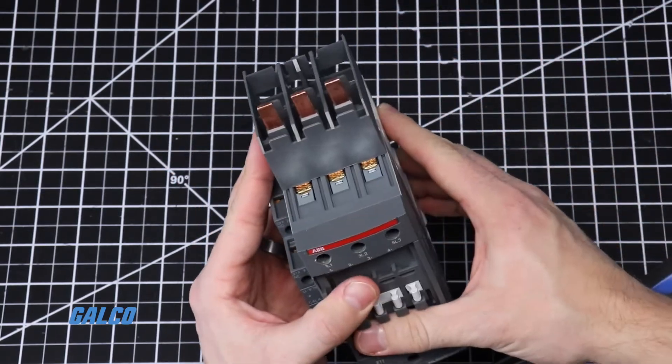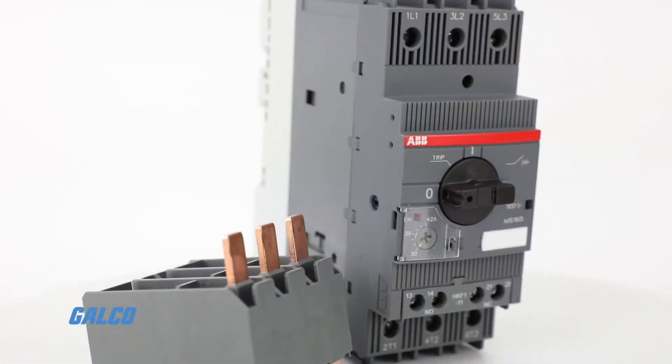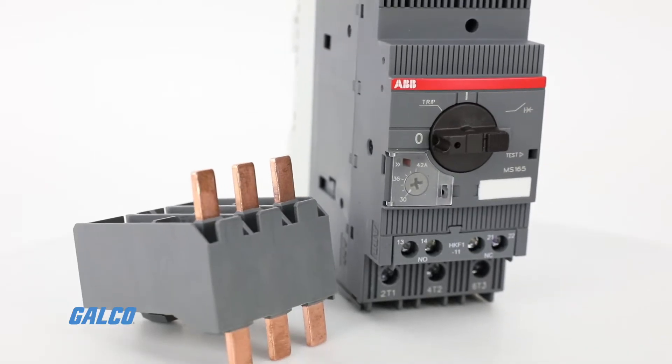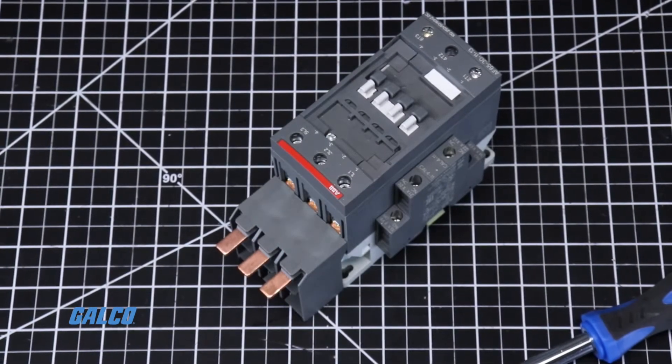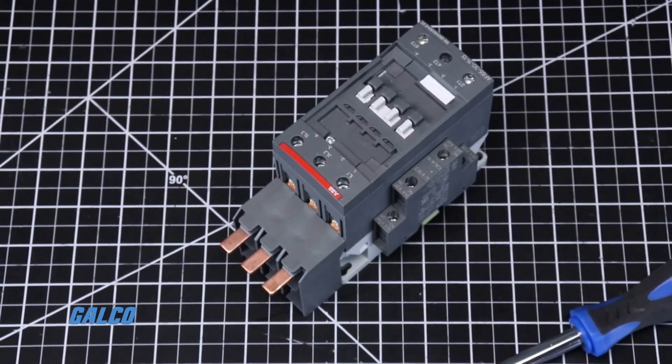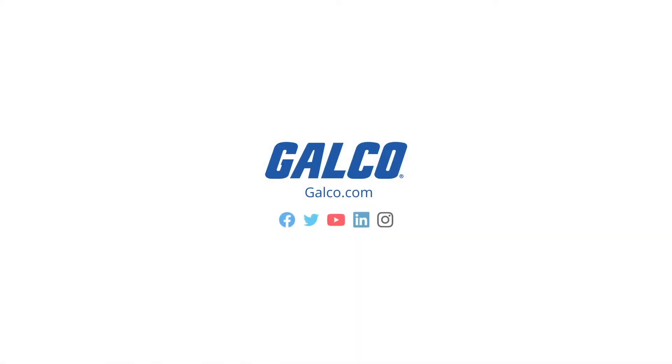To learn how to connect a bus bar module to the ABB MS165 manual motor starter, click the link above. To shop ABB products like the AF65 contactor, visit us at galco.com. Thank you.